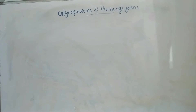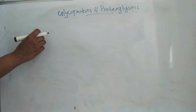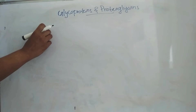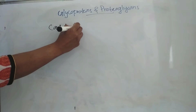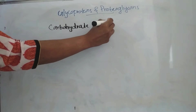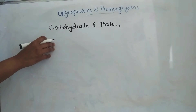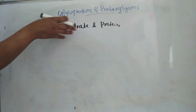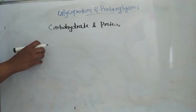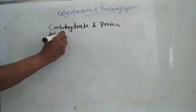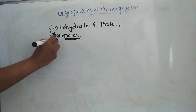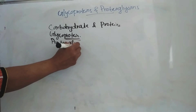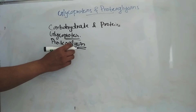Hello everyone, today we will discuss glycoproteins, proteoglycans, and the differences between these two. Both glycoproteins and proteoglycans are made up of carbohydrate and proteins. The part which is written later is more in amount — so in glycoproteins, protein will be more, and in proteoglycans, glycan will be more. Glycan means carbohydrates.